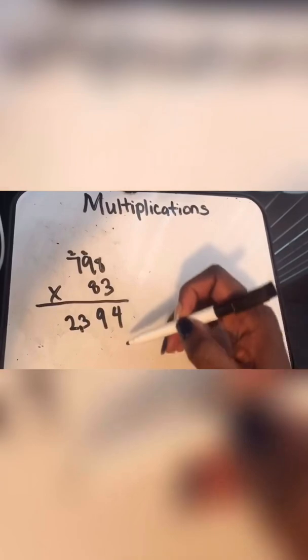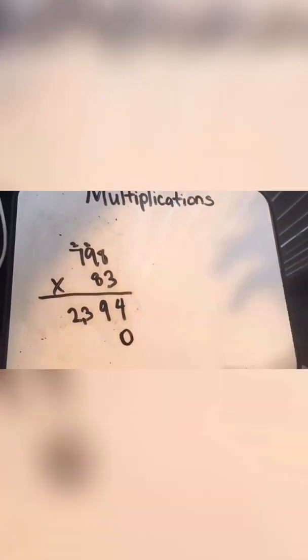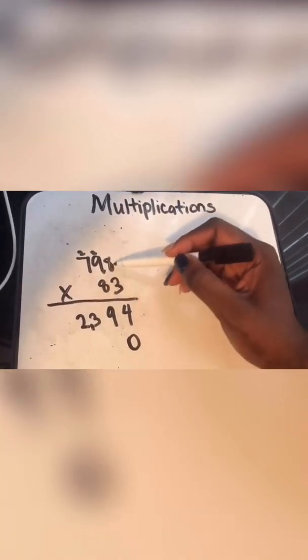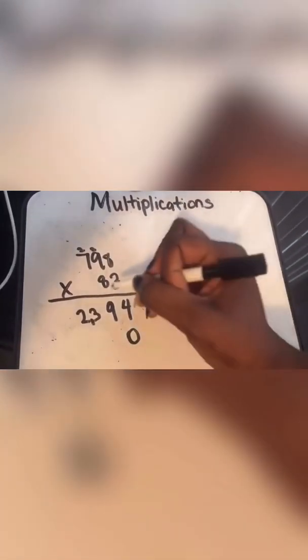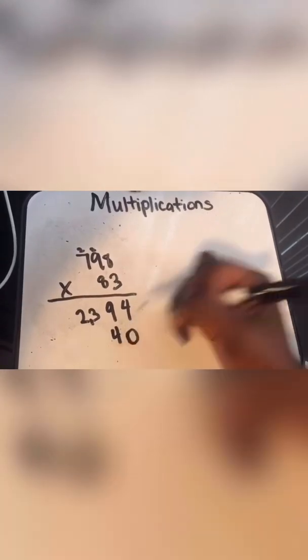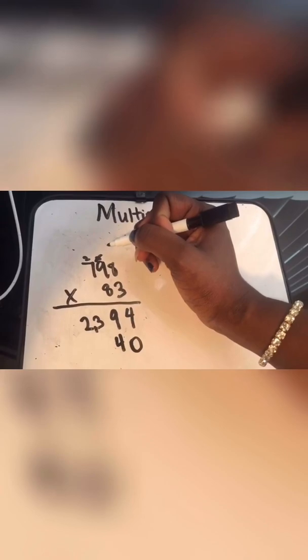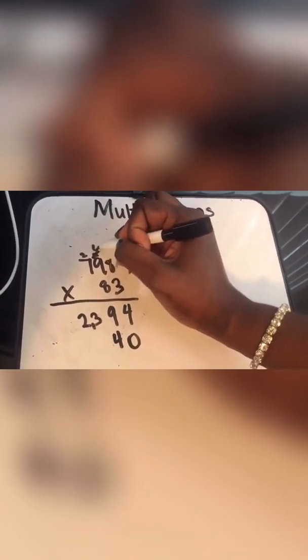Now we're going to put a zero because we have a second digit over here. So now we're going to say eight times eight is 64. So we're going to put a four here. And then we're going to cross this one here so we don't get confused. We're going to put that six up here.